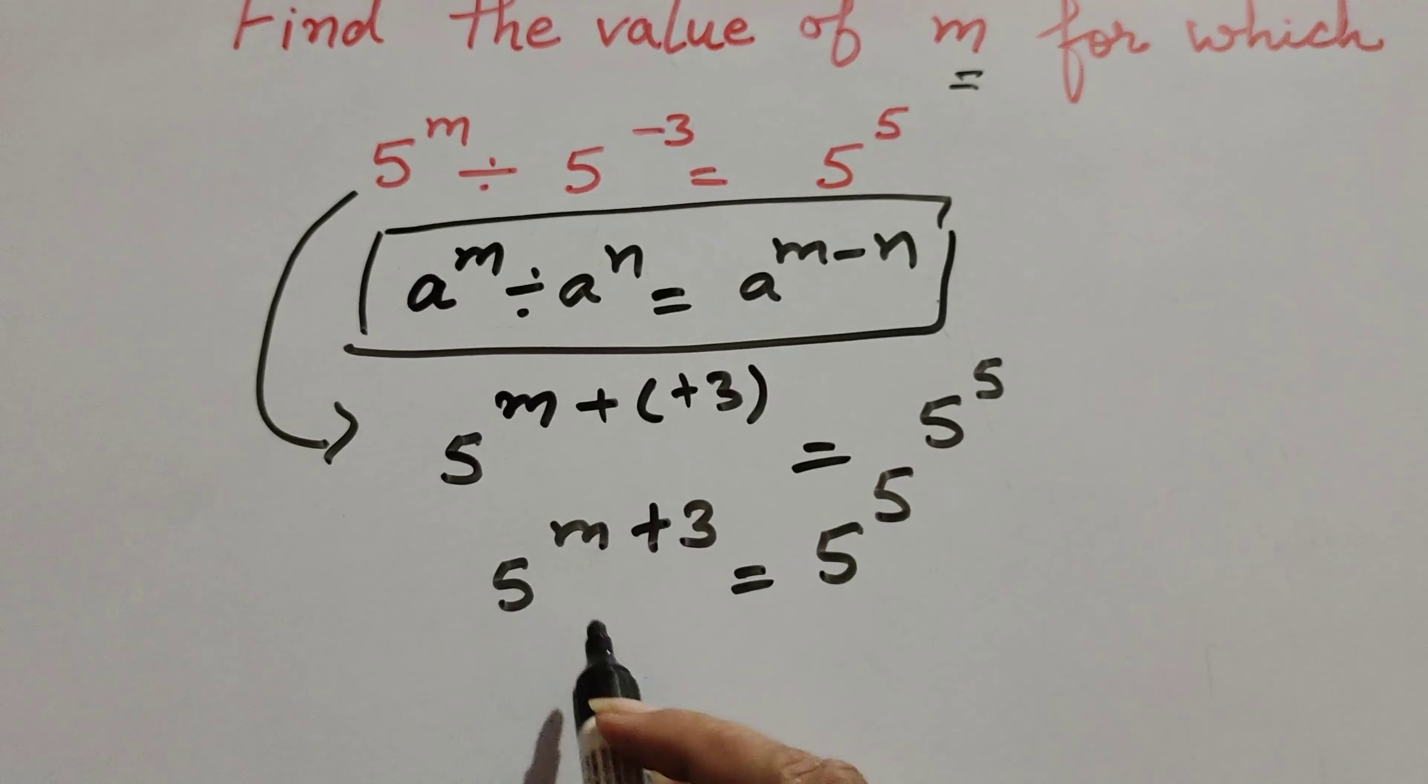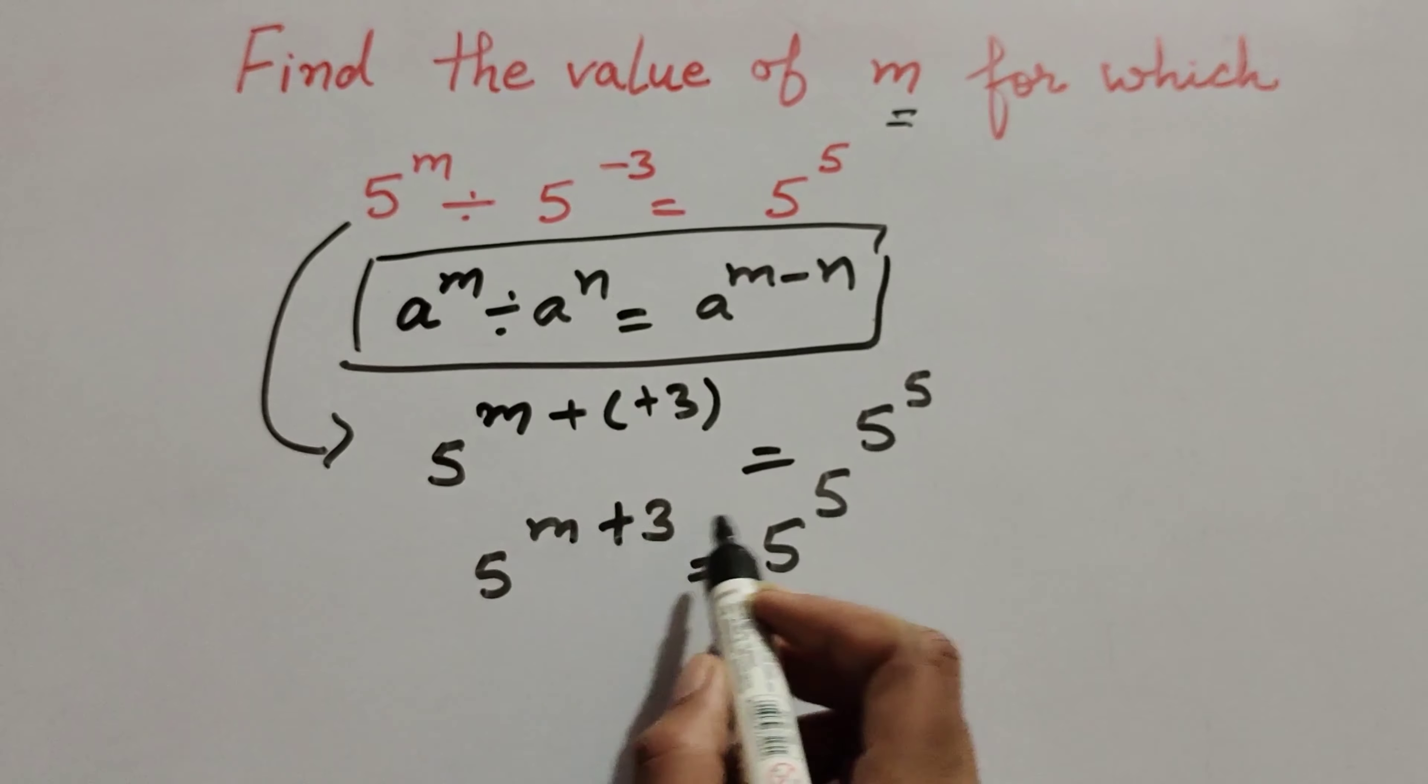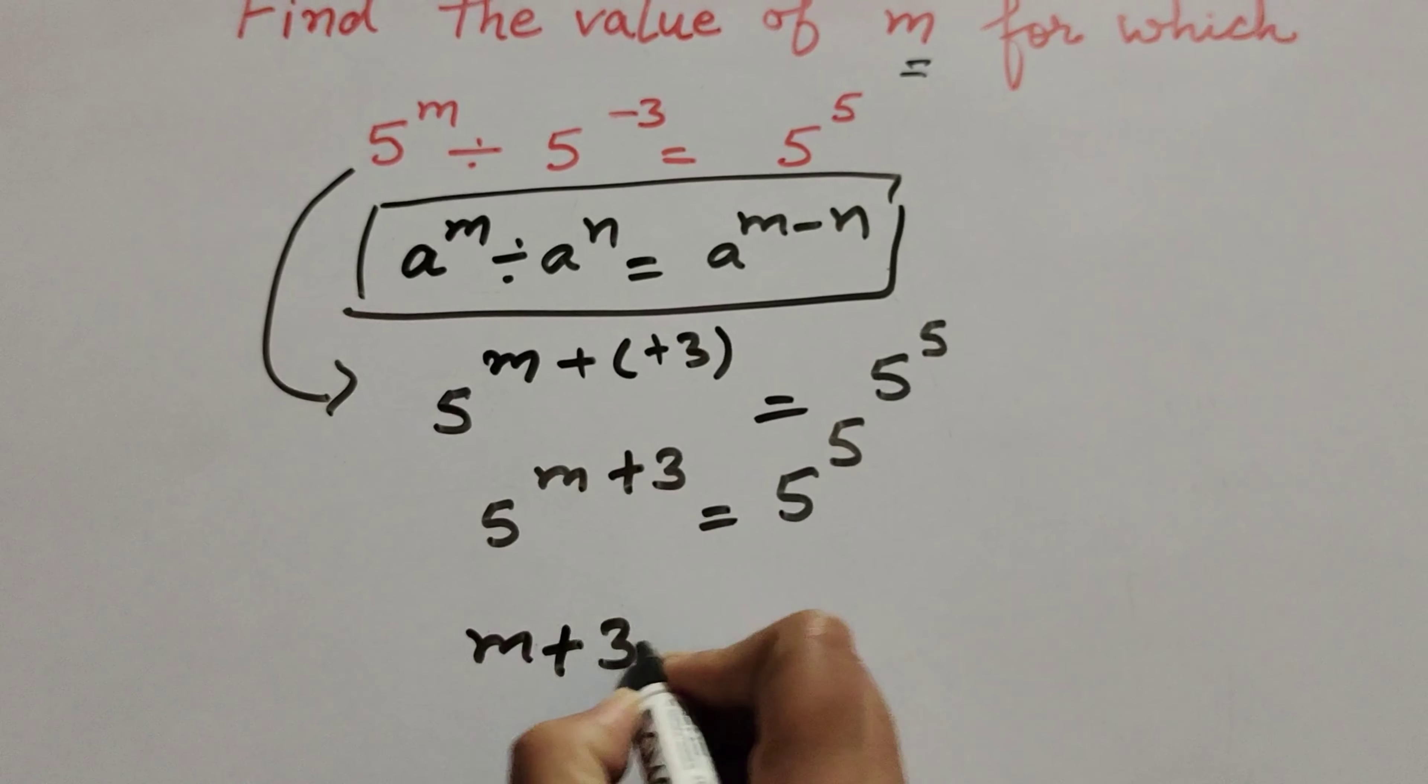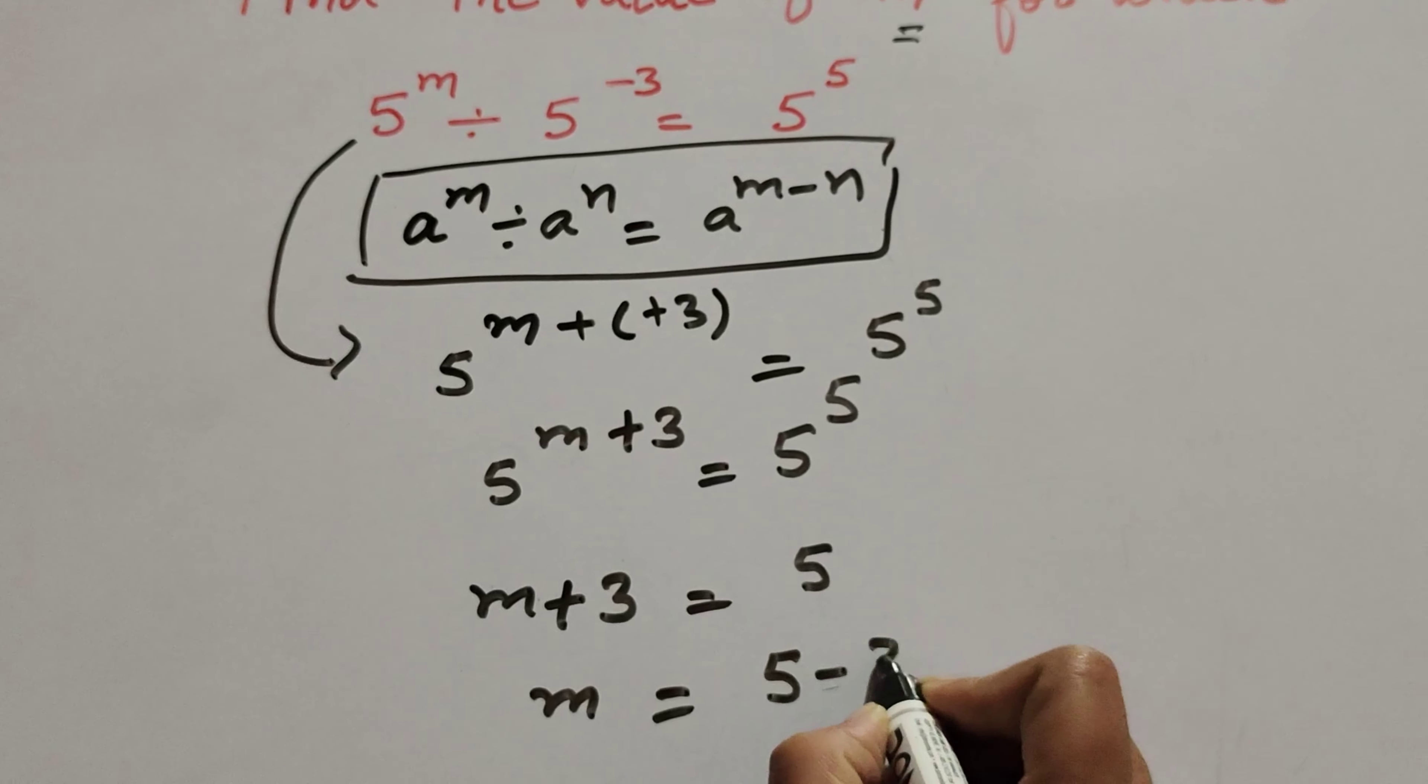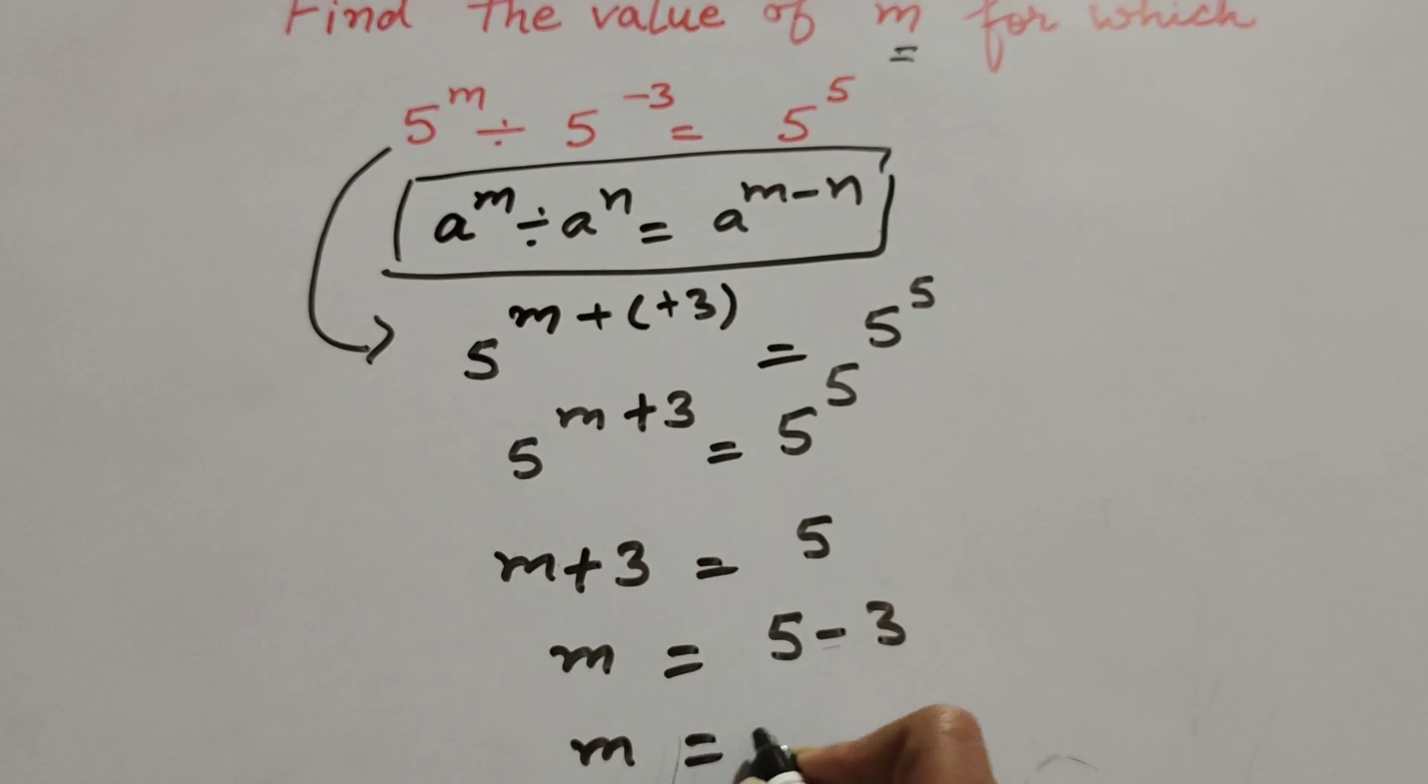On both sides, the bases are the same, so the exponents must be equal. Therefore, m + 3 = 5. Transposing 3 to the right-hand side, we get m = 5 - 3, so m equals 2.